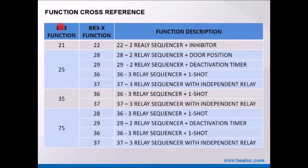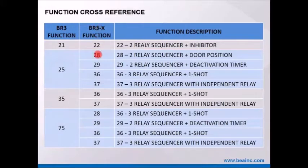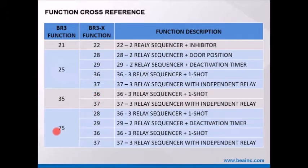Function cross-reference — the BR3 function is in this column, BR3X function here. For example, the most common legacy function 25, a delay-on-make delay-on-break function for using an electric strike on an automatic door operator, goes away on the BR3X, but you can do the same thing with any of four functions. Similarly, function 35 and function 75 on the BR3 are replaced by equivalent functions on the BR3X.